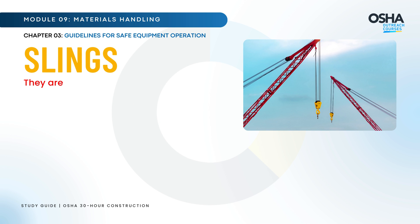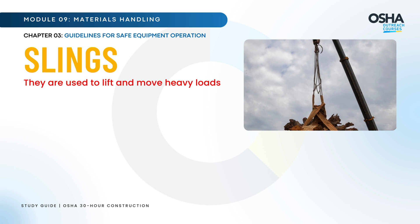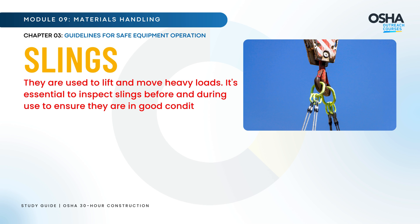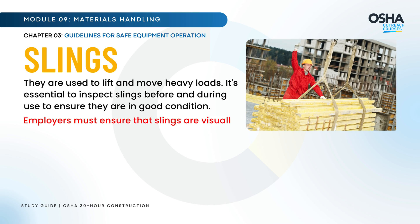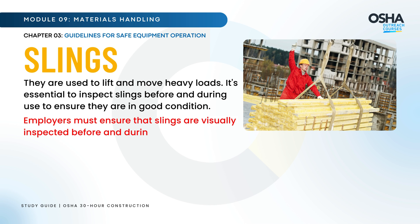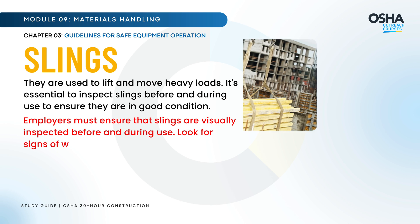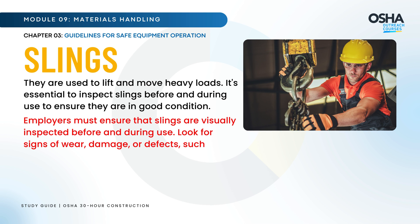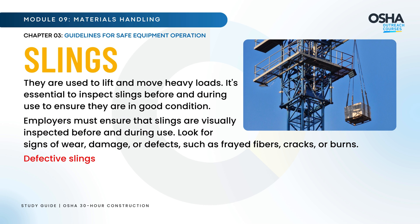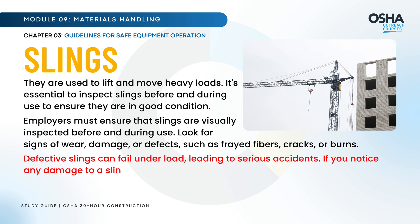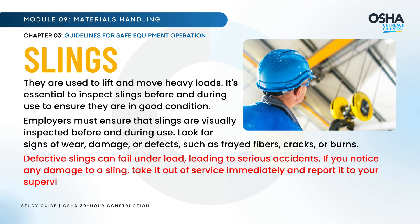Slings are used to lift and move heavy loads. It's essential to inspect slings before and during use to ensure they are in good condition. Look for signs of wear, damage, or defects such as frayed fibers, cracks, or burns. Defective slings can fail under load, leading to serious accidents. If you notice any damage to a sling, take it out of service immediately and report it to your supervisor.